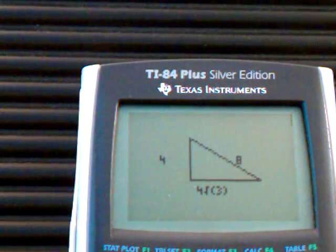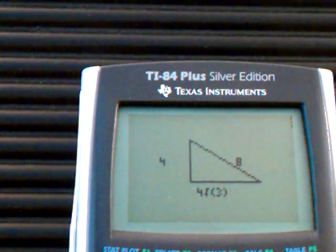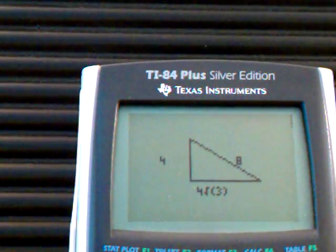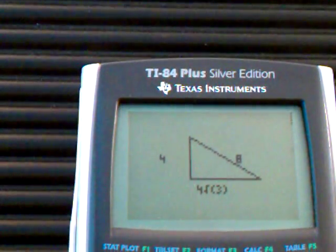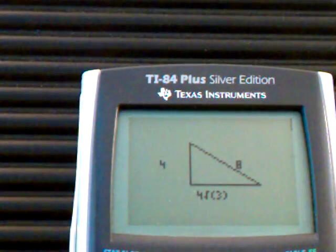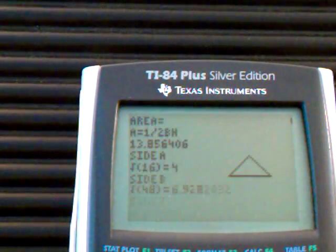The large side is 8, then the smaller side is 4, and the other side, which is the middle side, is 4 radical 3. And enter.